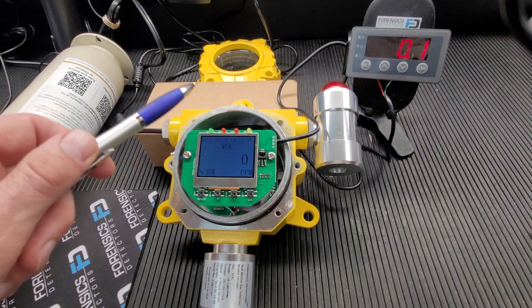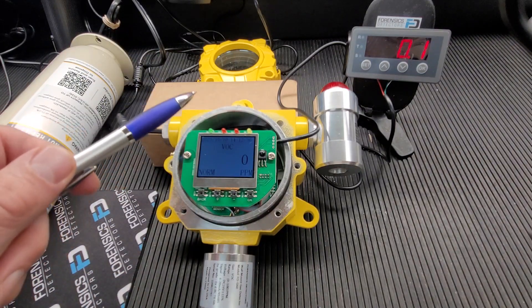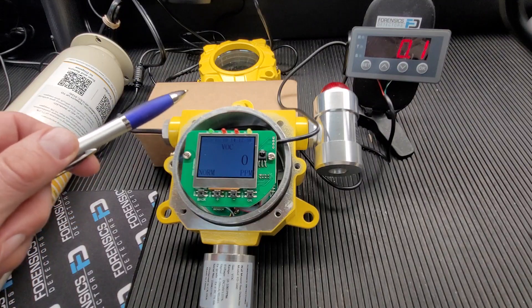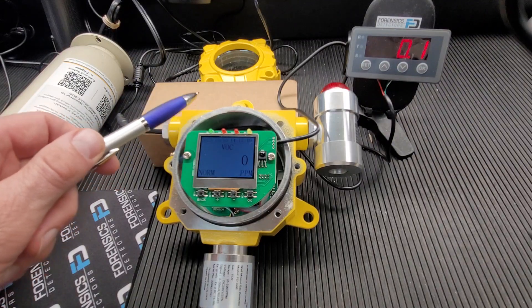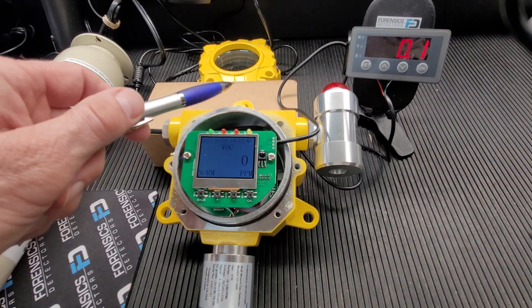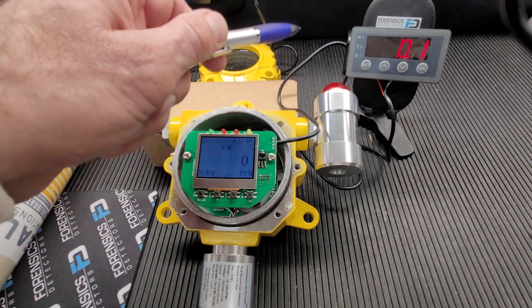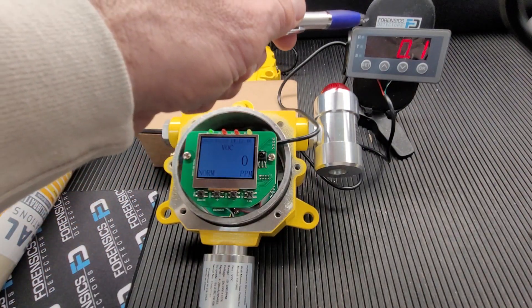Folks, check it out. We have our FD-60. This is a VOC, FD-60-VOC warm-out unit connected via 4-20 milliamp to a 4-20 milliamp display.